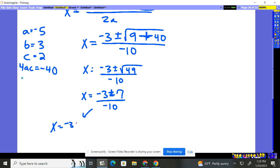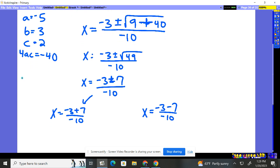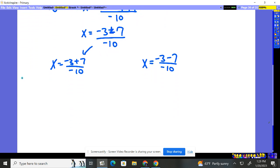So x is negative 3 plus the 7 over negative 10. Or over here, the other possibility is it's negative 3 minus the 7 over negative 10. Let's have a little more room. We're almost at our two answers.